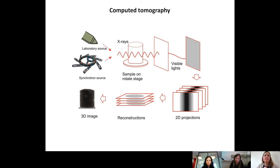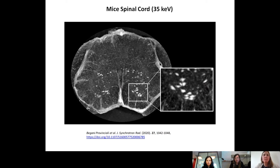Do you have images to share with us? Yes, this is an example — a picture of a section of a mouse's spinal cord imaged with XPCT at 35 kV with a synchrotron beam. In the magnification, the white dots are motor neurons that are involved in neurodegenerative diseases.